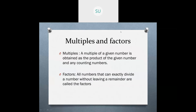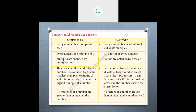Now we saw what are multiples and factors. A multiple of a given number is obtained as a product of the given number and any counting number. Factors are all numbers that can exactly divide a number without leaving a remainder. Now for comparison of multiples and factors: every number is a multiple of itself, and every number is a factor of itself and all its multiples.